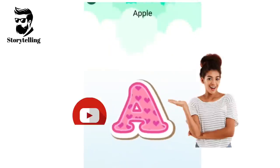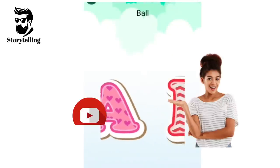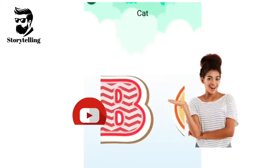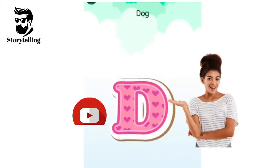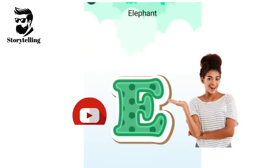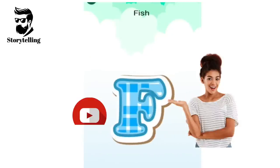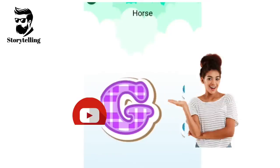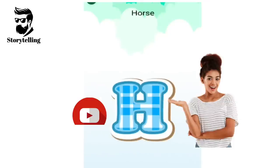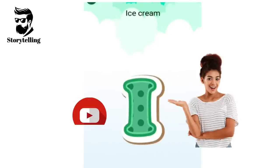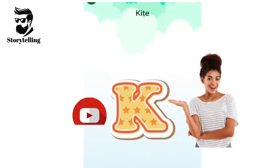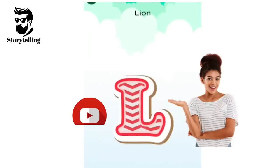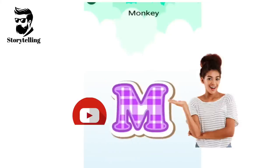A for Apple, B for Bull, C for Cat, D for Dog, E for Elephant, F for Fish, G for Goat, H for Horse, I for Ice Cream, J for Joker, K for Kite, L for Lion, M for Monkey.